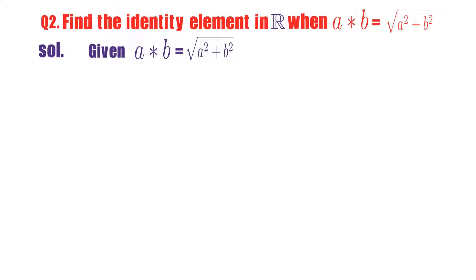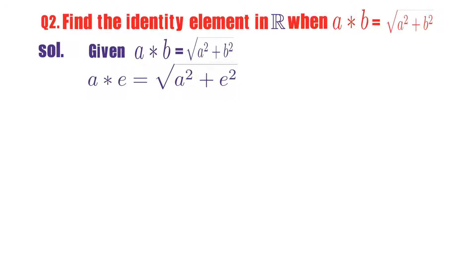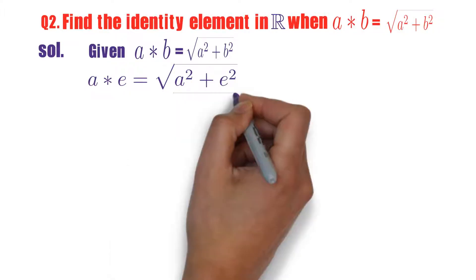Observe here, a star b. A is first element, b is second element. A star b is defined as root over sum of squares of given two elements. Now, you check a star e. What is a star e? Root over a square plus e square.